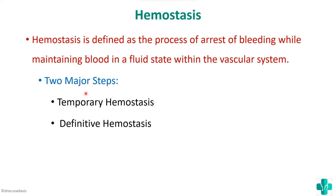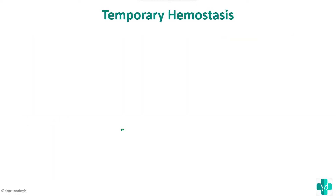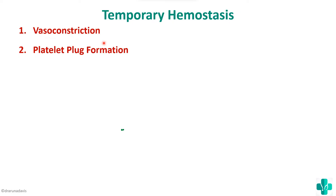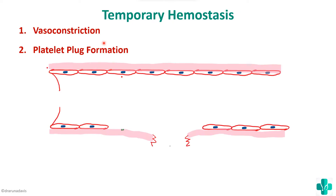First we have a temporary stoppage of bleeding, and then we have a definitive stoppage of bleeding. The steps of temporary hemostasis begin with vasoconstriction. As soon as there is a breach in the vascular wall or a cut, there will be vasoconstriction caused by the smooth muscles of the blood vessel. Then we have platelet plug formation.